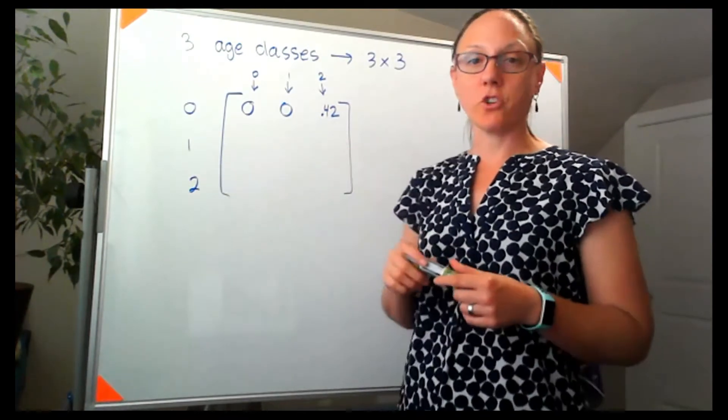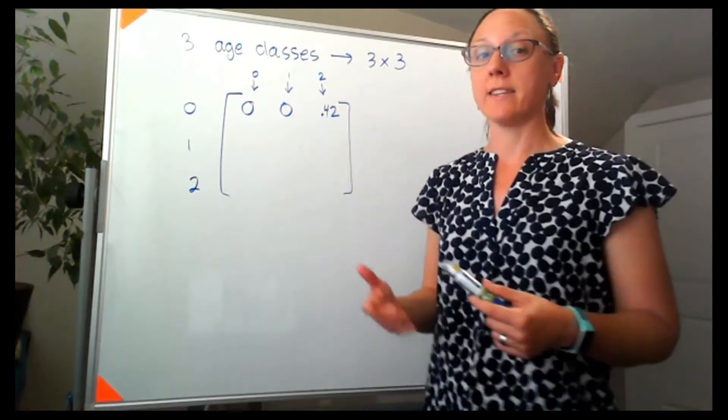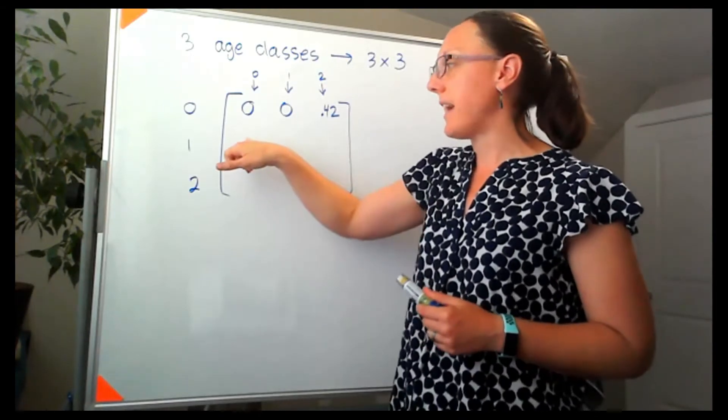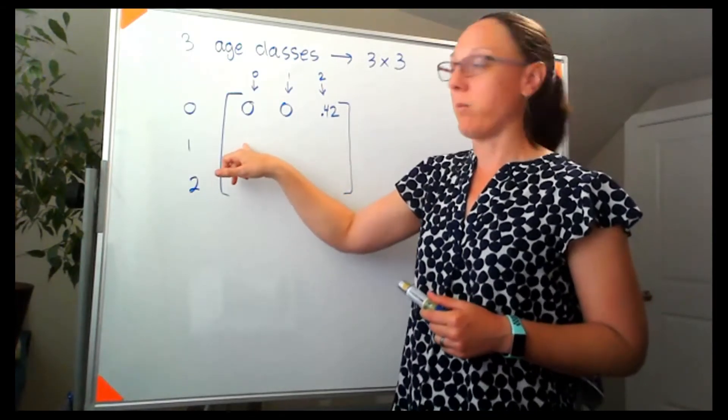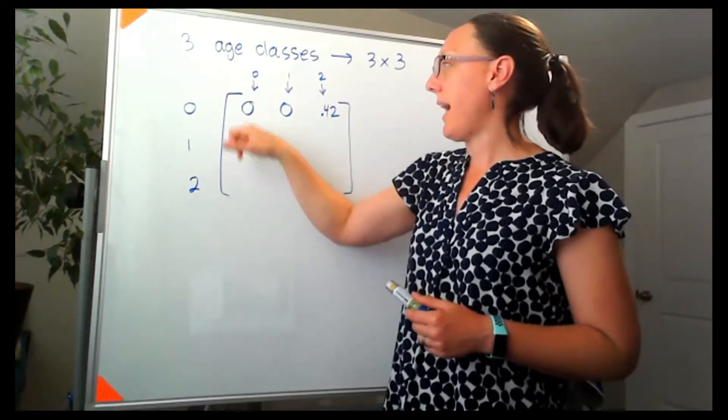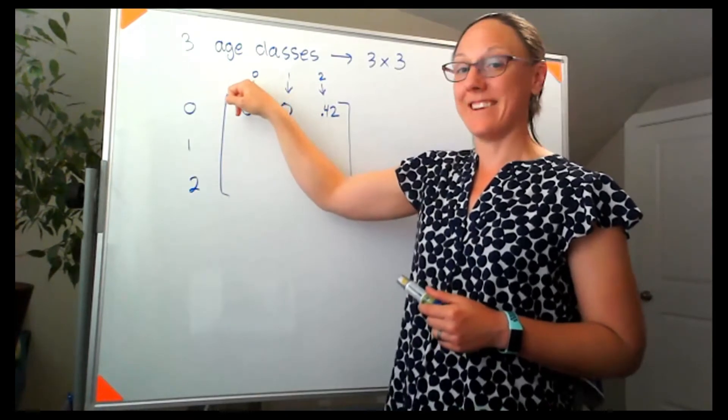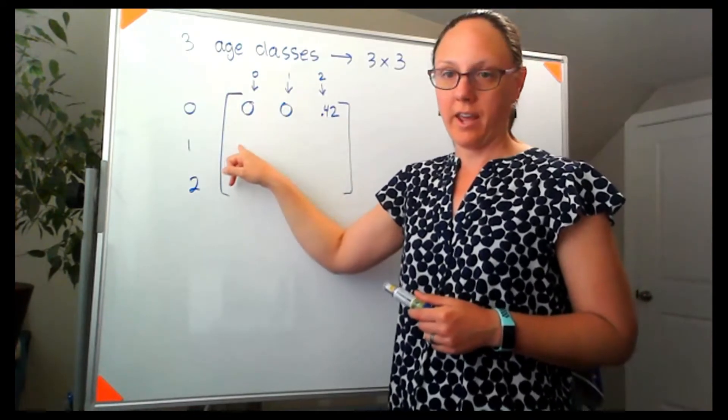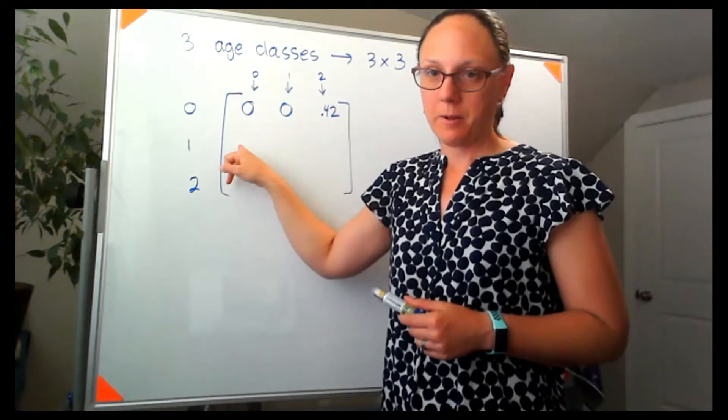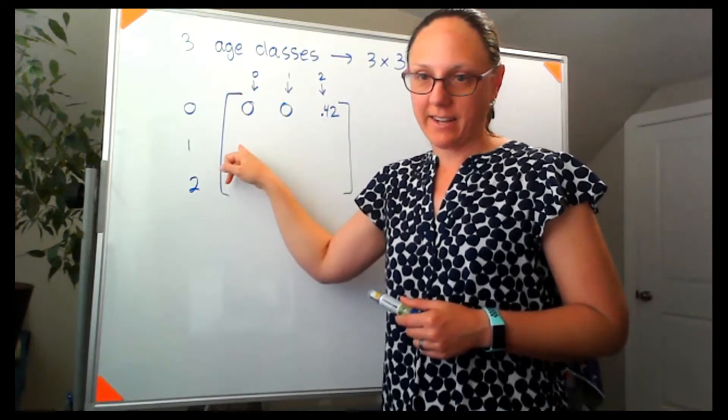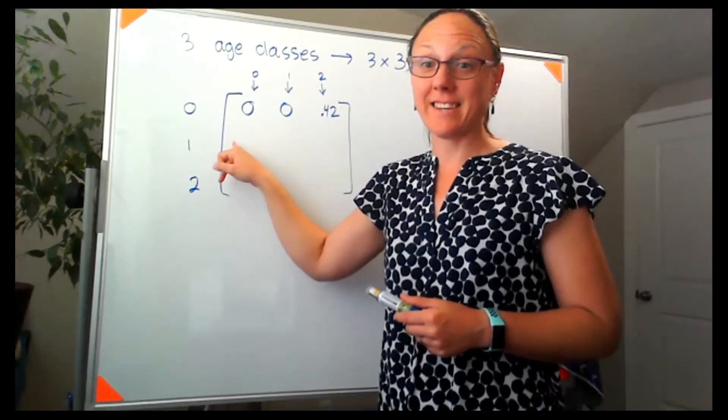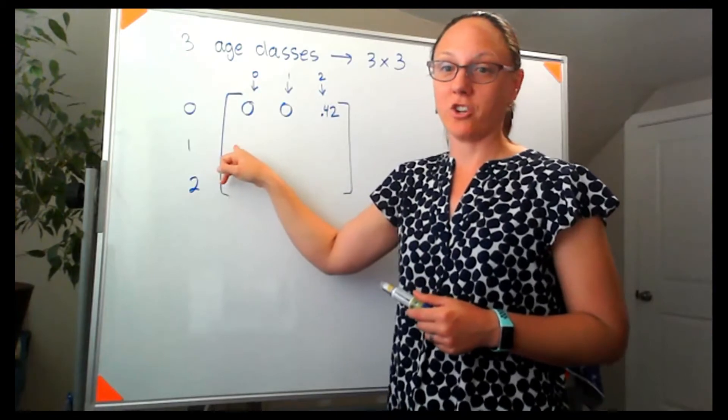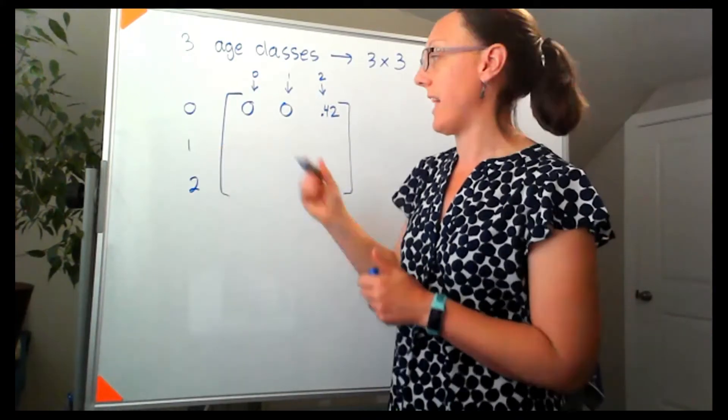Now for these next two rows we're looking at survival rates. So the entry right here would represent how many of the age class 0 individuals are growing up to be age class 1. And it looks like 60% of the age class 0 survived to age class 1.